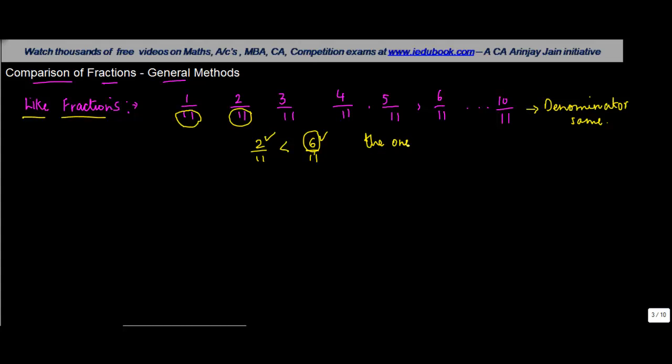The one which has greater numerator is bigger. So, let us say you were comparing 6 upon 11 and 3 upon 11. Because these are like fractions, the denominators are same. We see which numerator is greater - because 6 is obviously greater than 3, therefore 6 upon 11 has to be greater than 3.